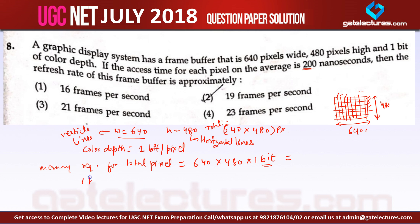And we know that 1 pixel takes 200 nanoseconds to refresh. Therefore to refresh the whole screen, it will take a total of 640 × 480 × 200 nanoseconds. Where this is representing the total number of pixels and this is representing for every pixel this much time is required.